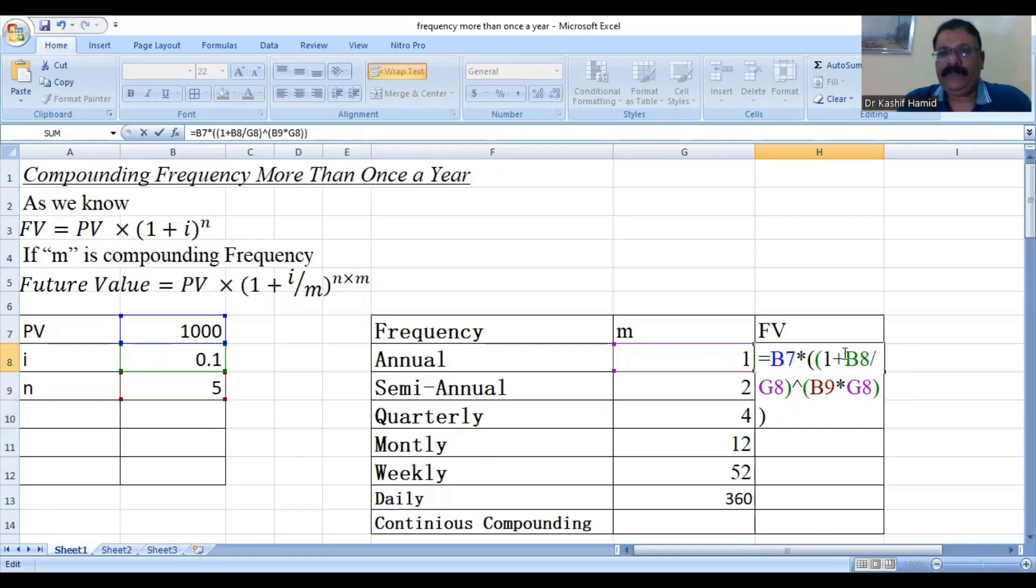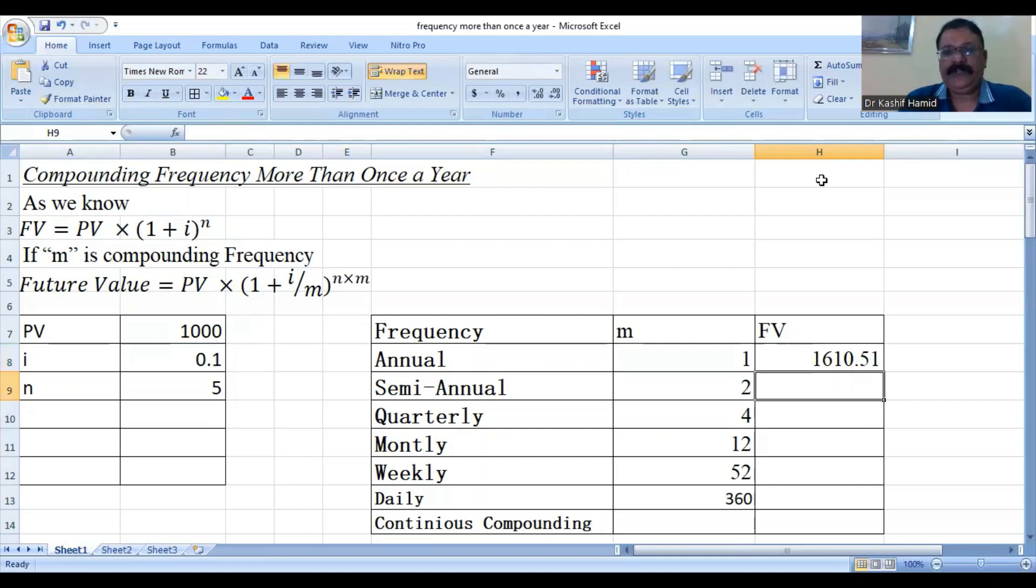In this situation, we will fix the interest rate and number of years as well as the present value. So, you see, in first instance, and we will apply it to the others.